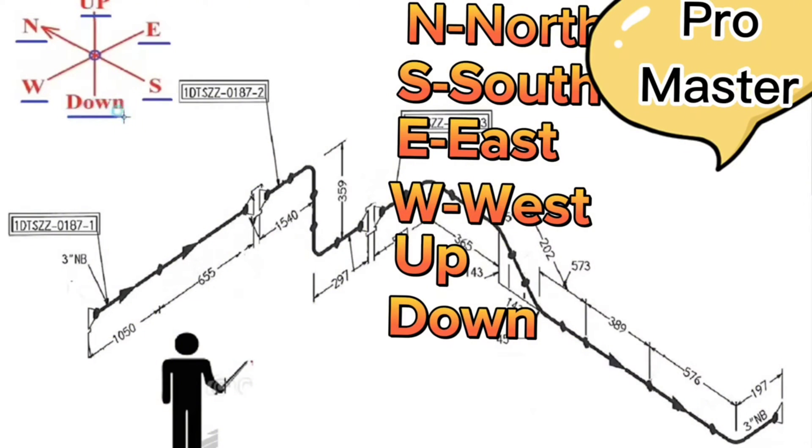By studying these directions we can easily read the pipe isometry. The person reading the pipe drawing should imagine himself standing at the intersection of these directions, facing north.